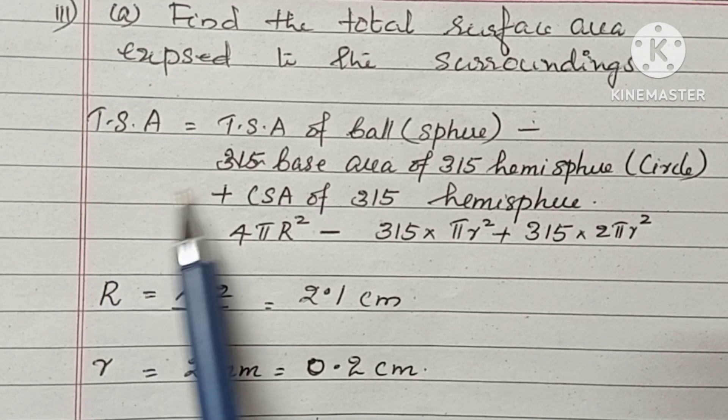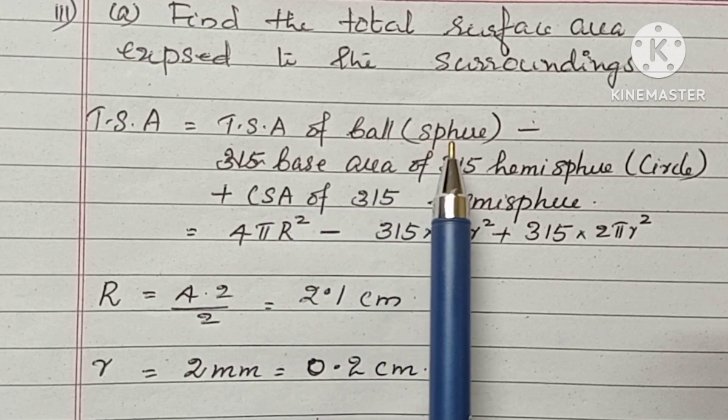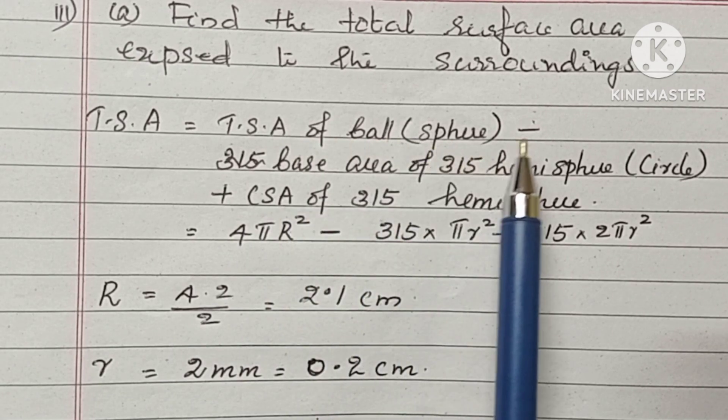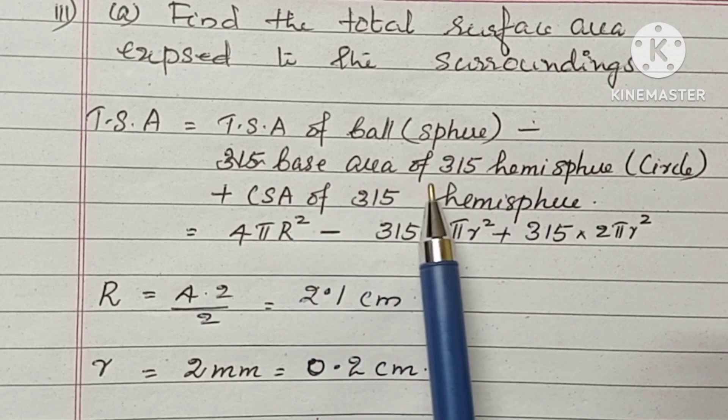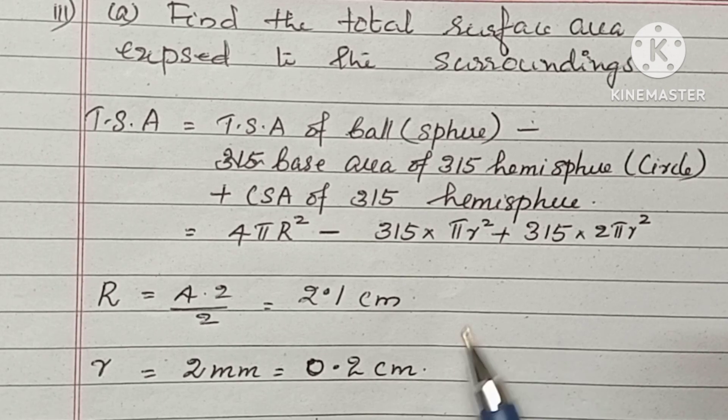Total surface area is total surface area of the ball, that is, golf ball. It is sphere in shape. Minus base area of 315 hemisphere, that is, the shape is circular. Plus, CSA of 315 hemisphere. The formula is 4πR² minus 315 into πr² plus 315 into 2πr².